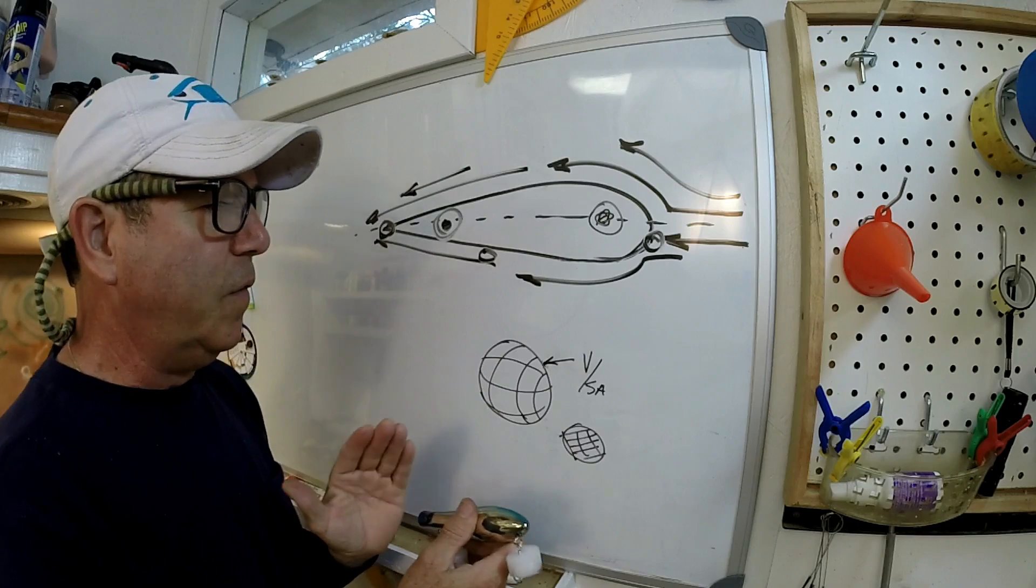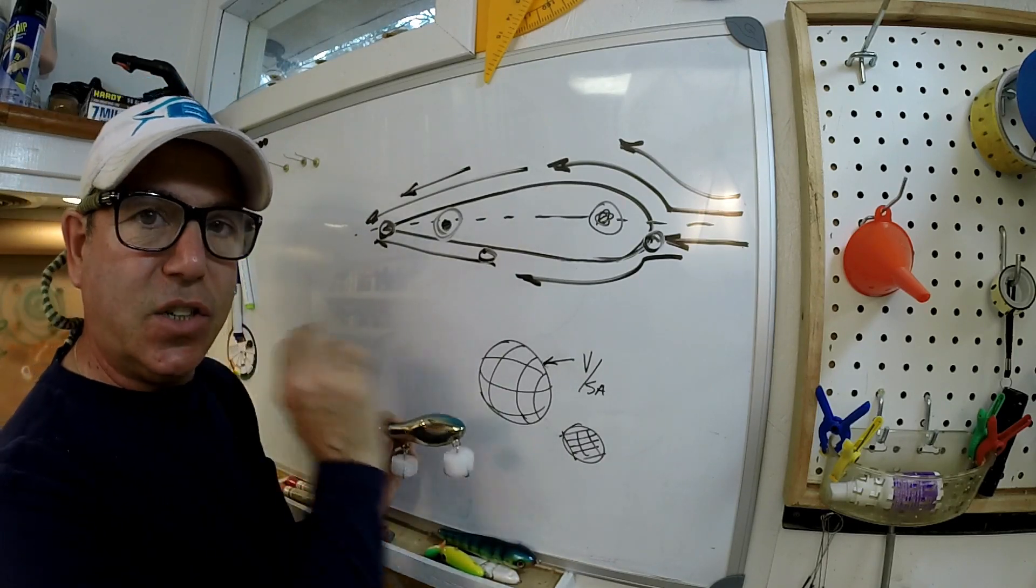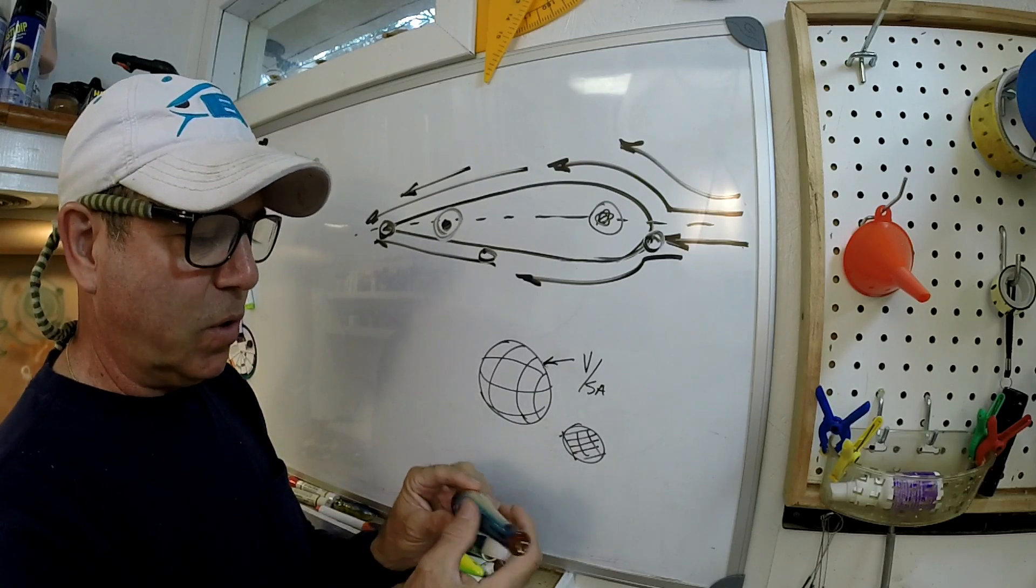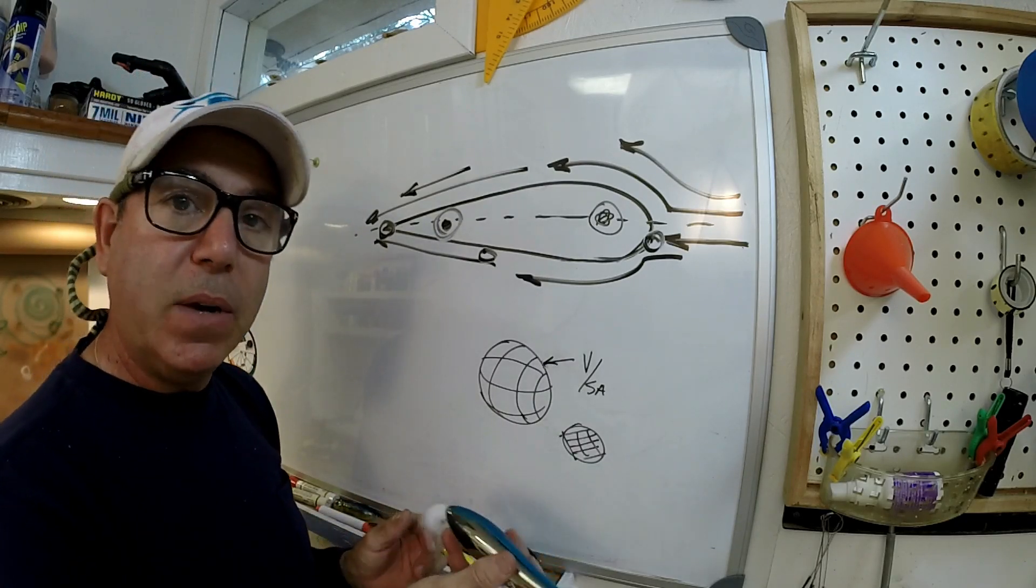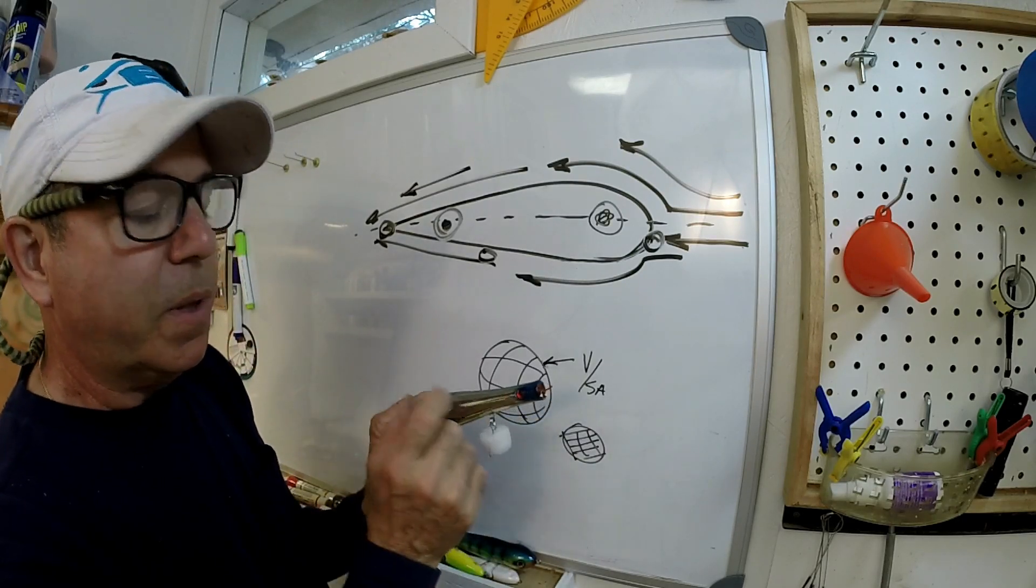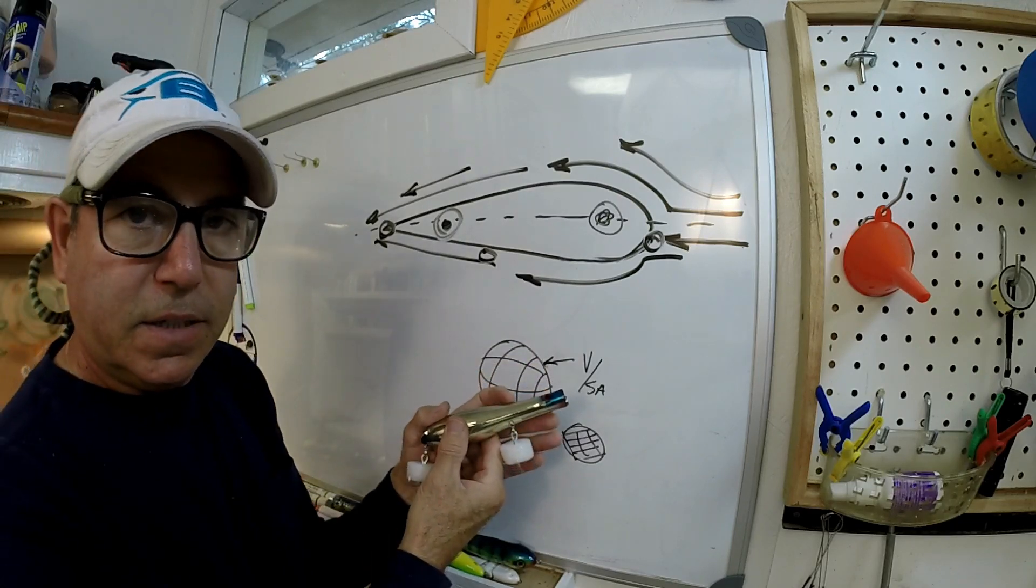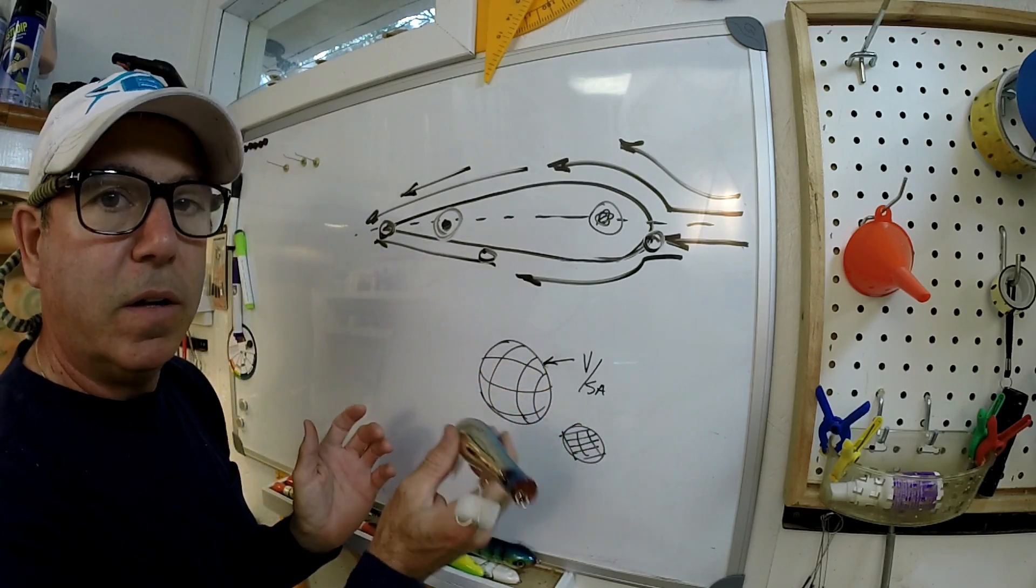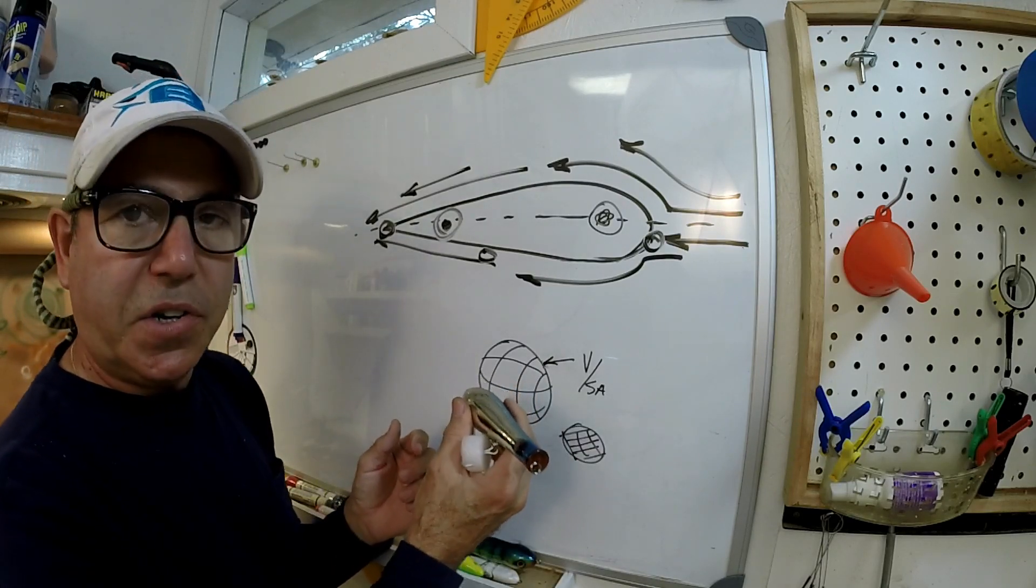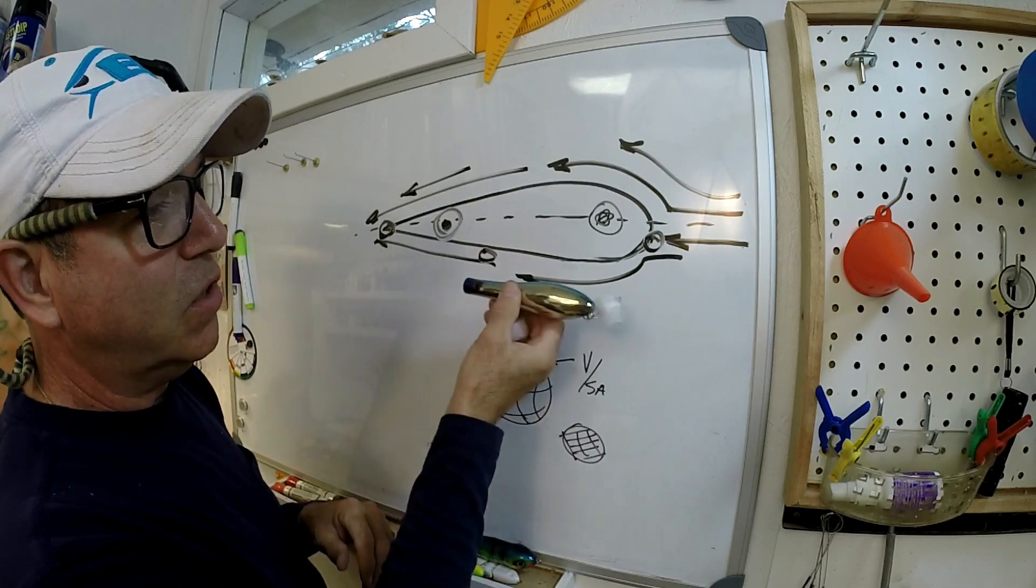So along the lines of moving that weight towards the direction of travel, you can also have a lure that has a big weight shift. So that would mean a large chamber with a pretty heavy weight. I try to include a long chamber with a heavy ball. It gives me a nice heavy rattle and it gives me that weight shift as I cast it. So this lure not only has the right shape, it also has the weight shift in it.